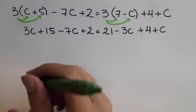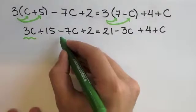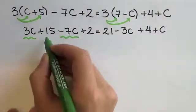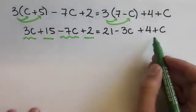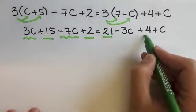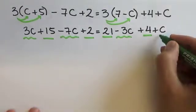Just as we have been doing, we want to add similar terms first. So, 3c is similar to negative 7c, just as 15 is similar to 2 as there are numbers. The right side happens the same thing. Numbers with numbers, 21 and 4. And variables, negative 3c with positive c.